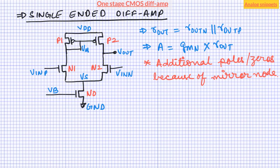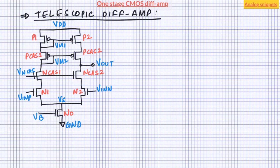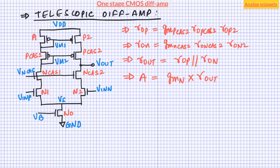Next we discuss techniques to increase the gain further. The most logical way is to increase effective output resistance by cascoding both the load stage and the input stage — since effective Rout is the parallel combination of both. The resulting topology is called a telescopic amplifier. The effective Rout can be in hundreds of megaohms or even gigaohms, and the resulting gain can be in hundreds or thousands. The most obvious disadvantage is a severely limited input and output common-mode range, which remains challenging even with wide-swing cascode loads, especially at lower supply voltages.